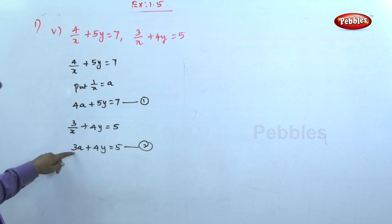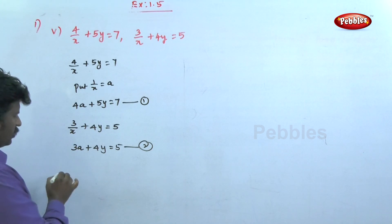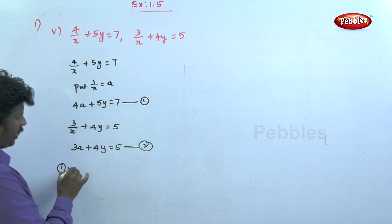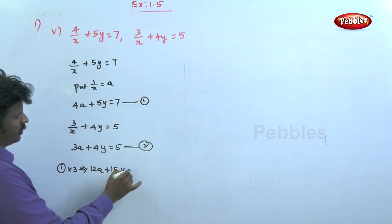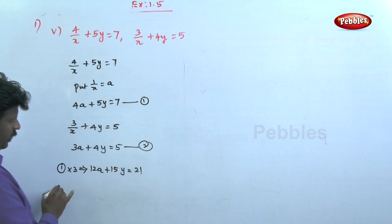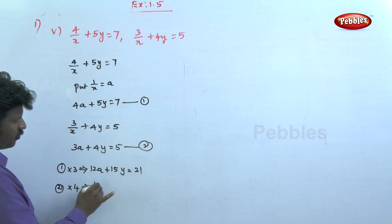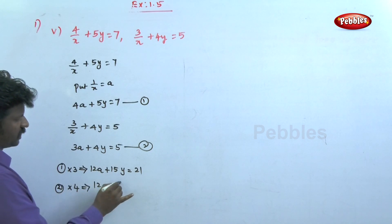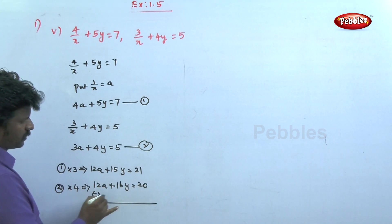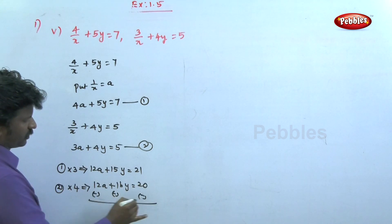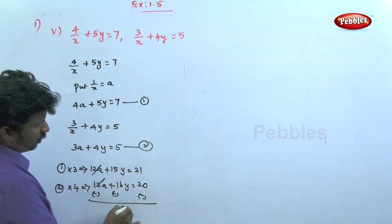Now for elimination: coefficients of a are 4 and 3. Multiply equation 1 by 3: 12a plus 15y is equal to 21. Multiply equation 2 by 4: 12a plus 16y is equal to 20. Subtracting, 12a cancels. 15 minus 16 gives minus 1.